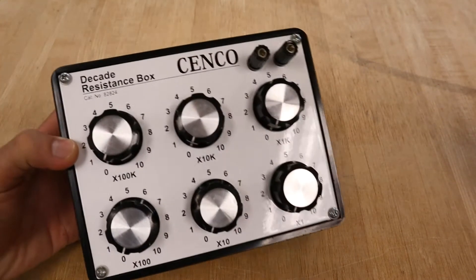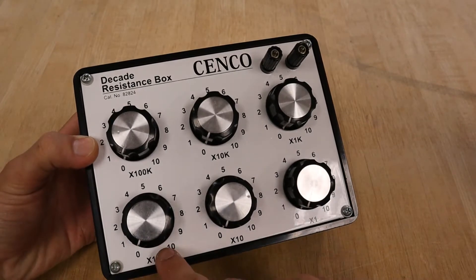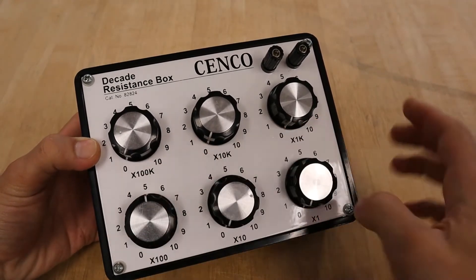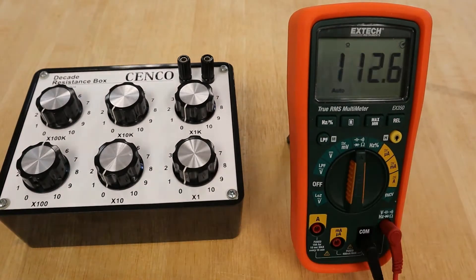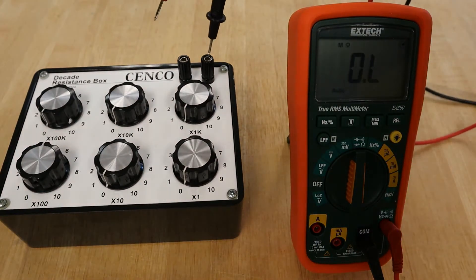We will start by setting the resistance of this decade resistor to 500 ohms, and we'll experimentally measure the actual resistance with our DMM, recording this value as our resistance.